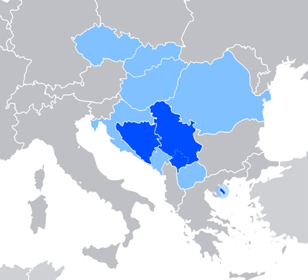Most Serbian words are of native Slavic lexical stock, tracing back to the Proto-Slavic language. There are many loanwords from different languages, reflecting cultural interaction throughout history. Notable loanwords were borrowed from Greek, Latin, Italian, Turkish, Hungarian, Russian, and German.